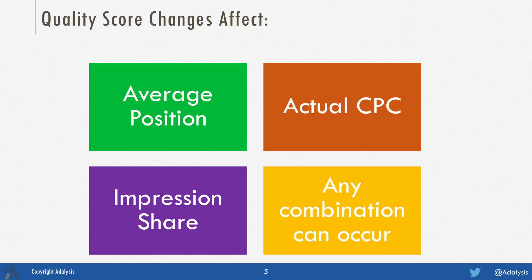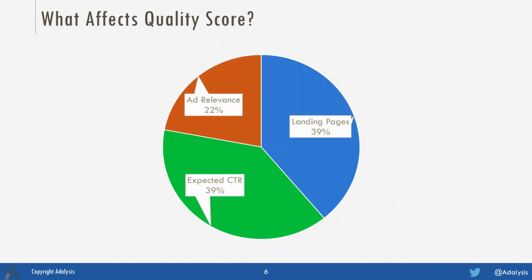Raising your quality score can decrease your CPC if you're in high positions. If you're in low positions, it can increase your position, which can then increase your impression share. Quality score is comprised of three factors: ad relevance, expected click-through rate, and landing page experience.